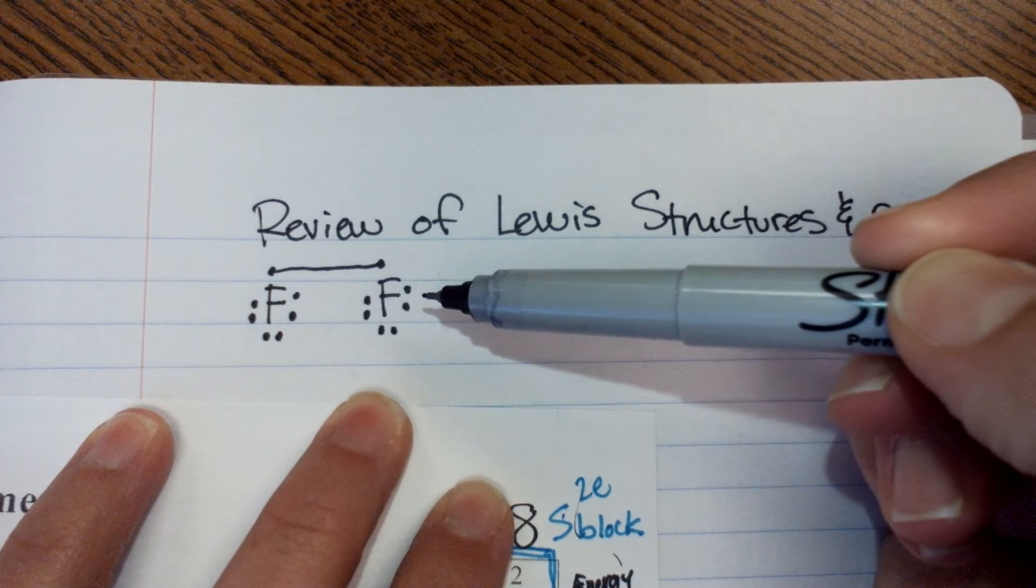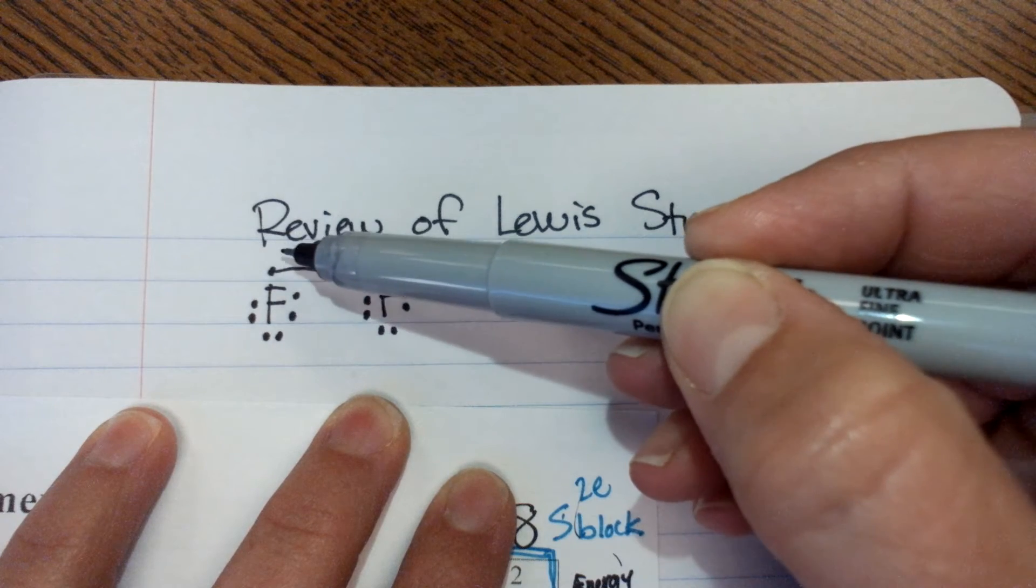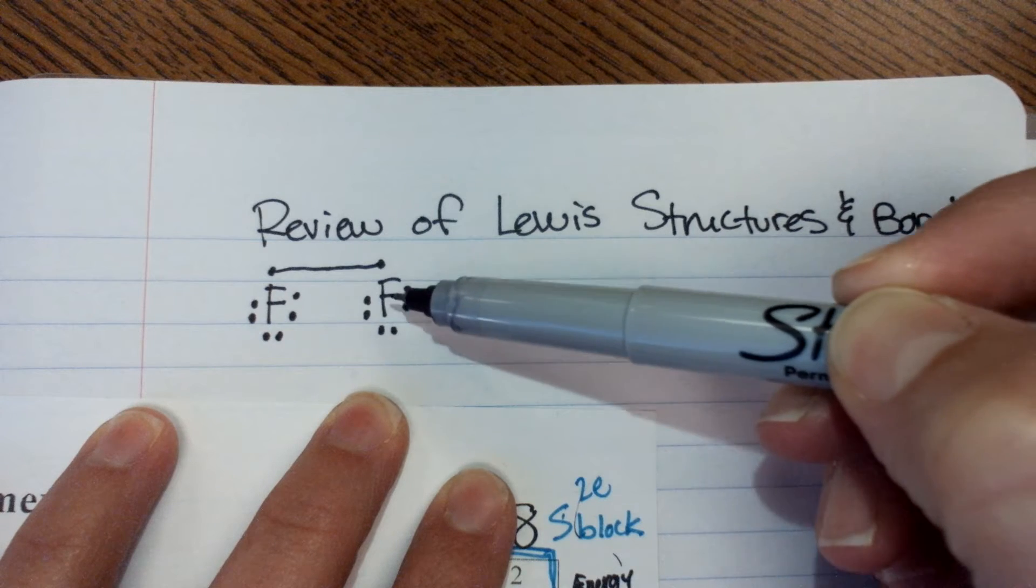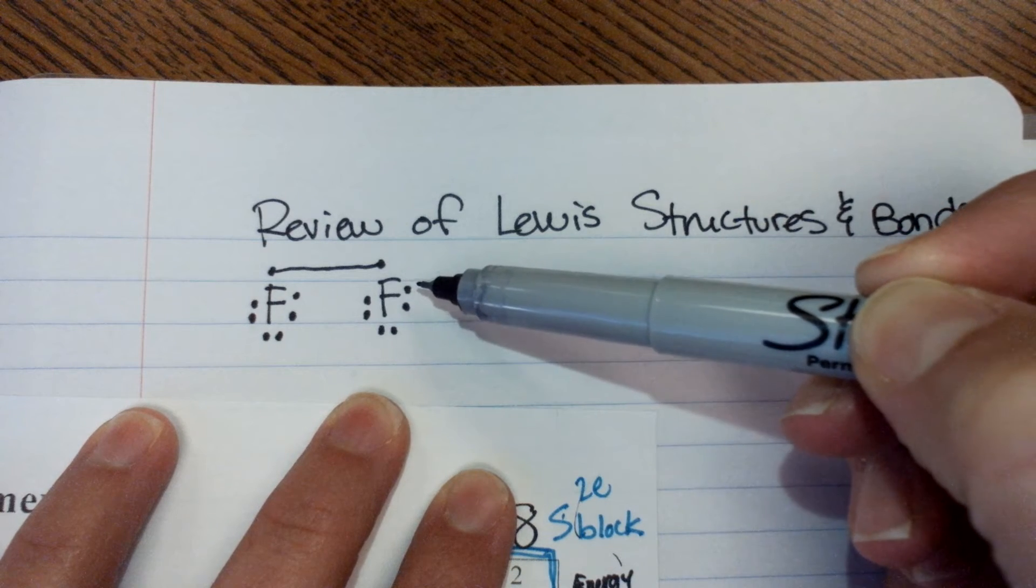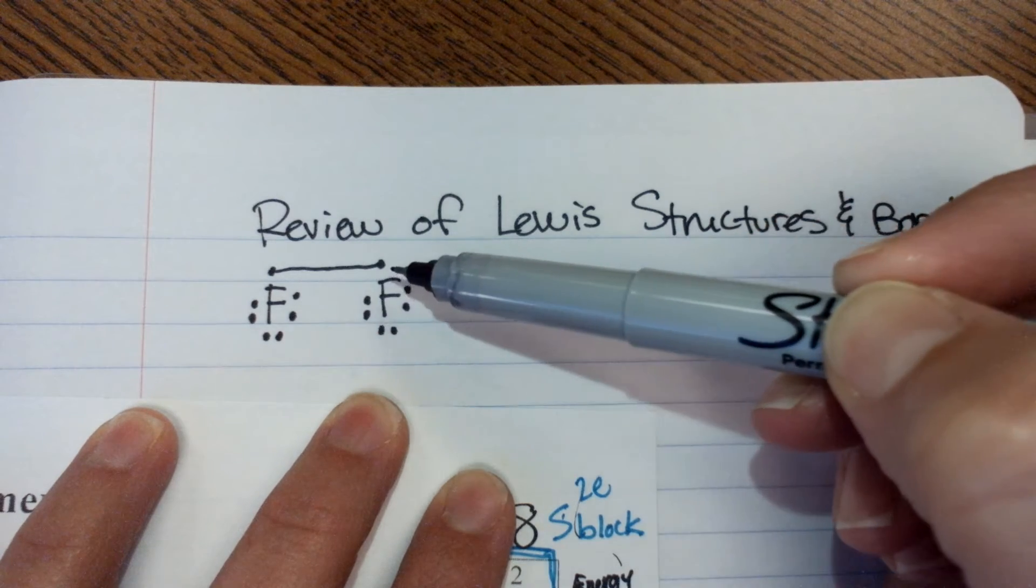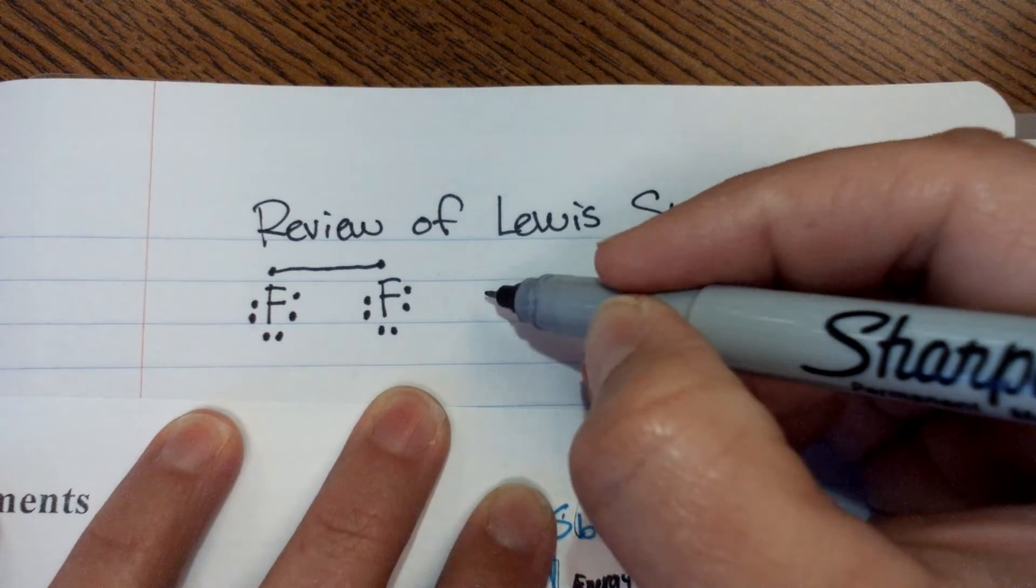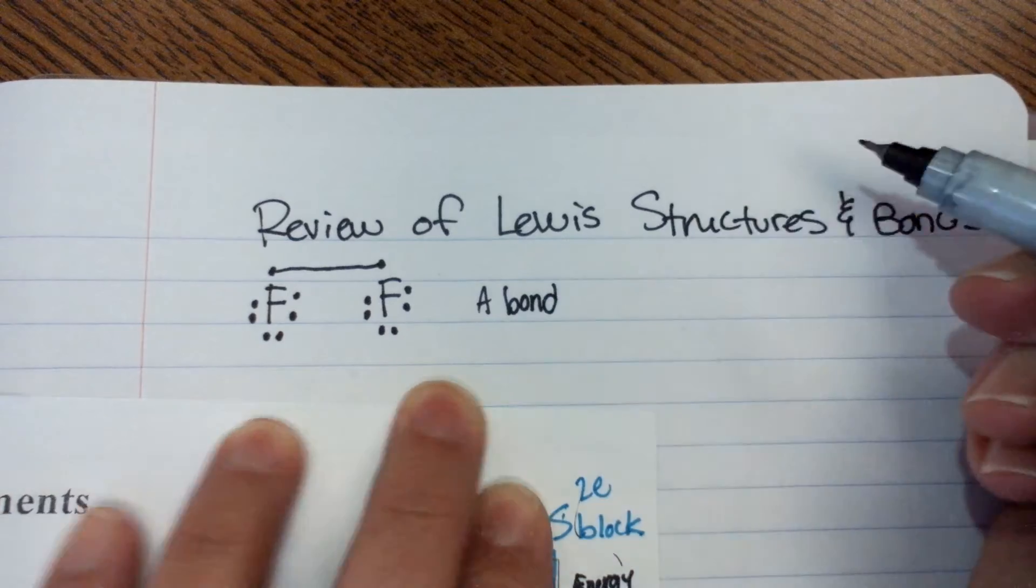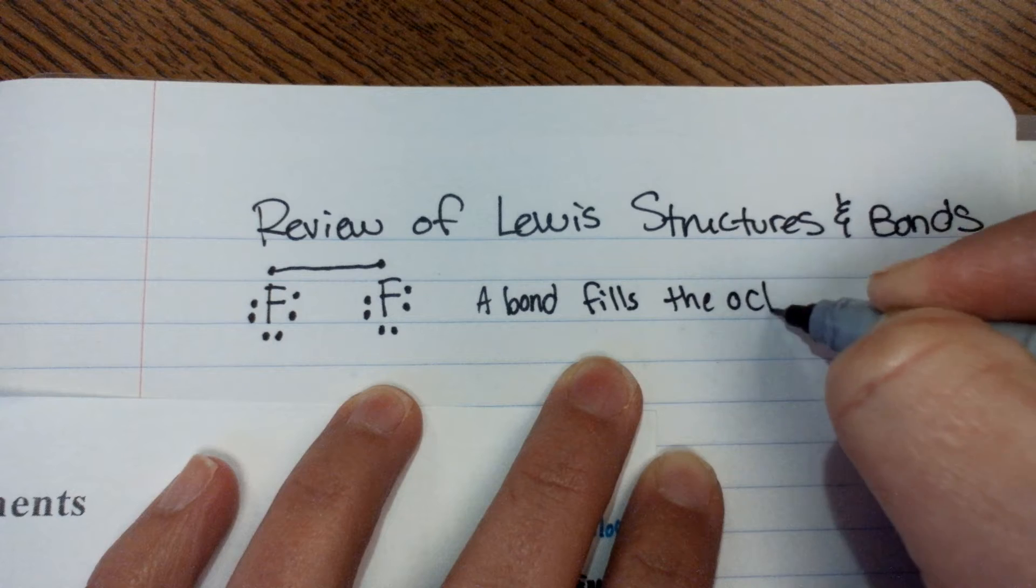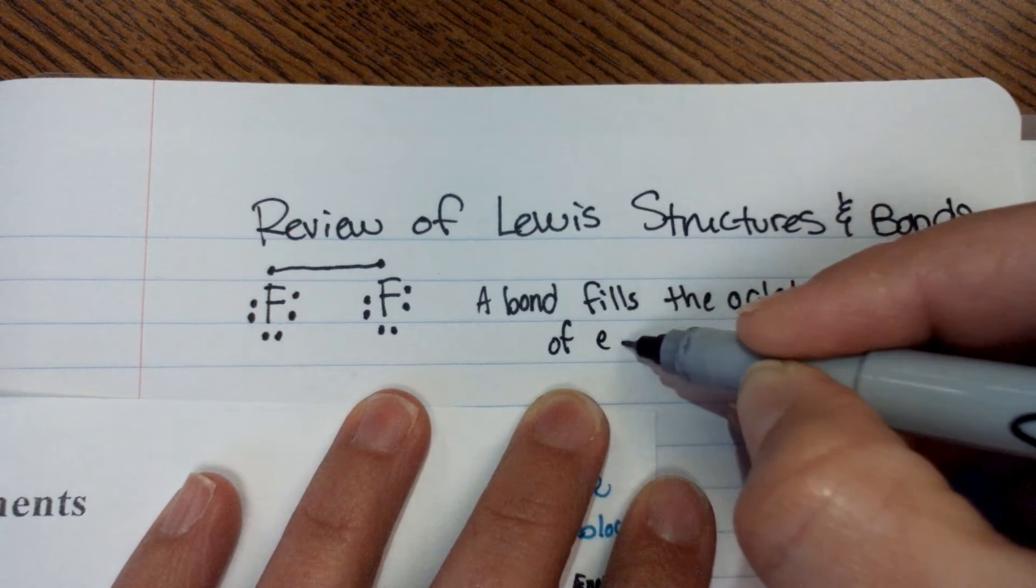The same thing on our second fluorine atom. This electron from the first fluorine atom can go fly around our second fluorine atom. And that means that this second fluorine atom has one, two, three, four, five, six, seven, eight, because that one can fly around here, eight valence electrons. And that gives it a full octet.